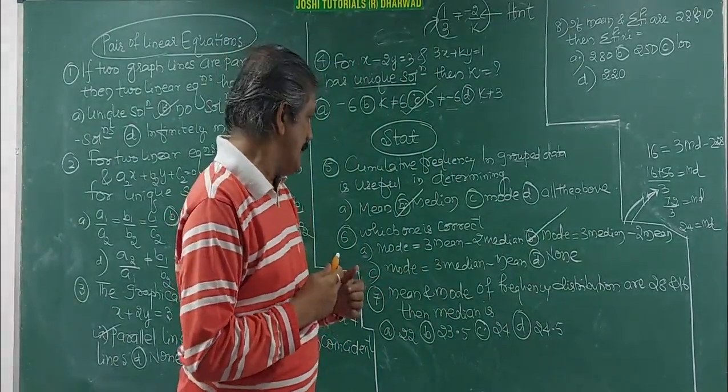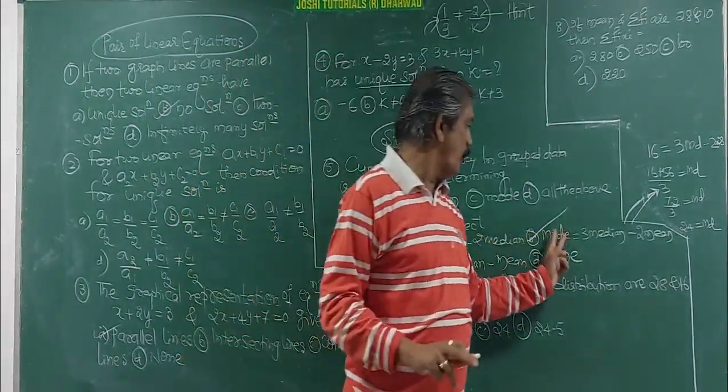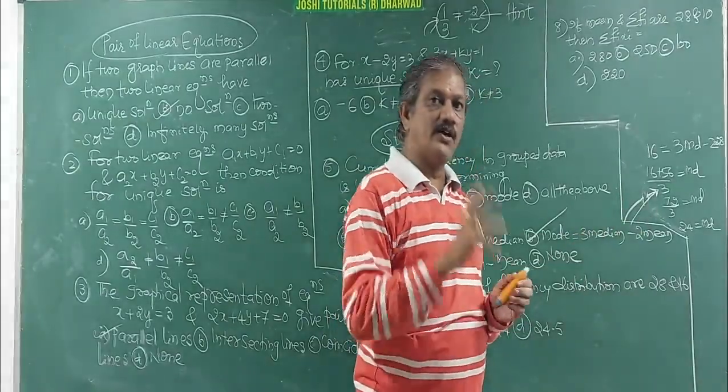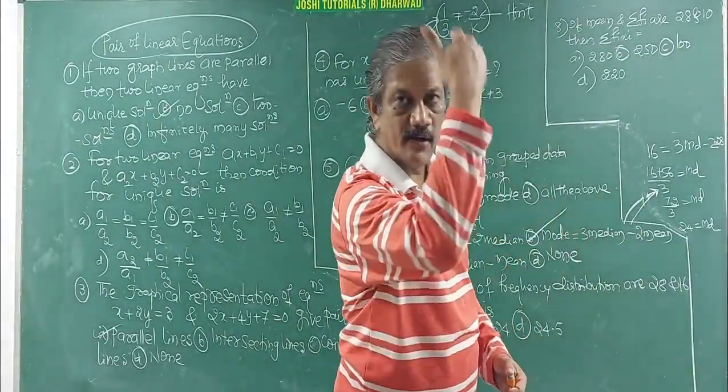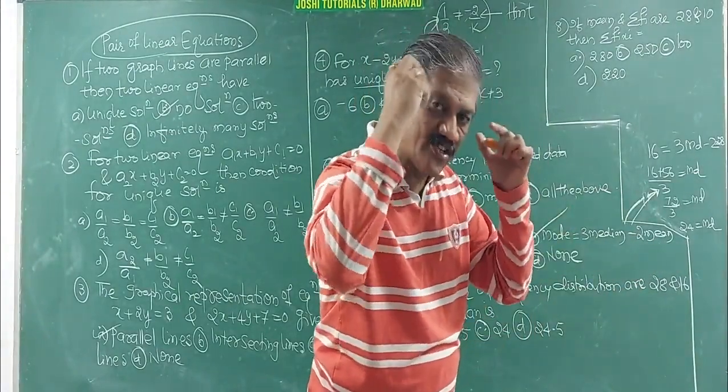Formula is given. Next, mode is fixed, remember. Mode you remember, right side you remember, 3 and 2, minus sign, median first, mean second. You remember this trick.